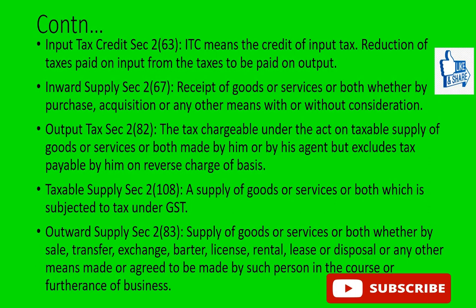Section 2, subsection 82 defines 'output tax': in relation to a taxable person, it means the tax chargeable under the GST Act on taxable supply of goods or services or both made by him or his agent, but excludes tax payable by him on a reverse charge basis. In simple terms, it is the amount of tax paid on sales.